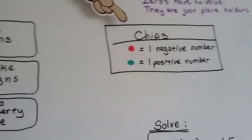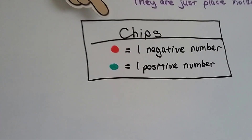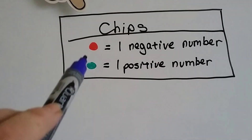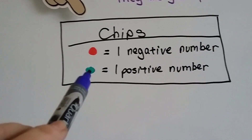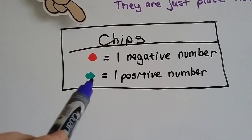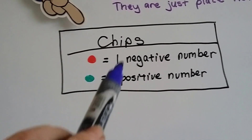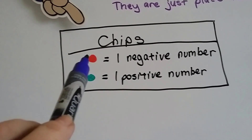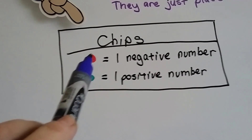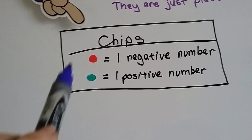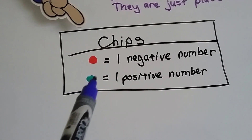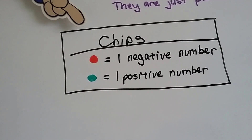For those of you who haven't been completely following along, I use these chips. Red means negative and green means positive, and they stand for 1. So if I had 5 red chips, it means negative 5. And if I had 3 green chips, it's a positive 3.